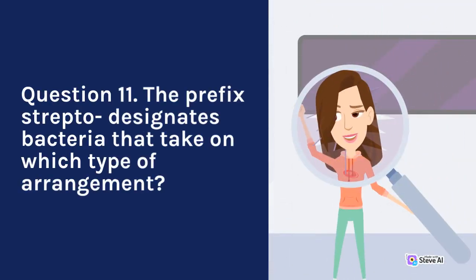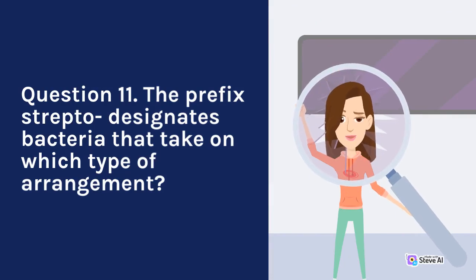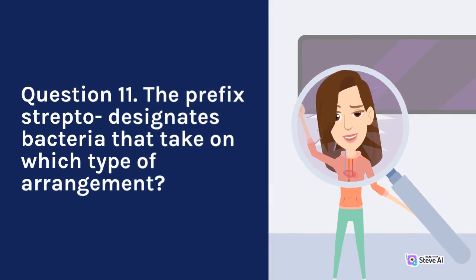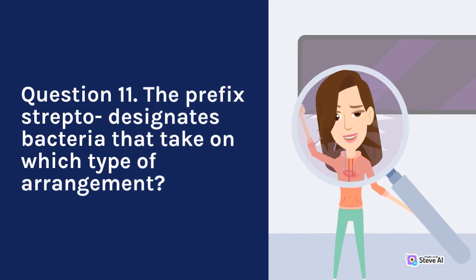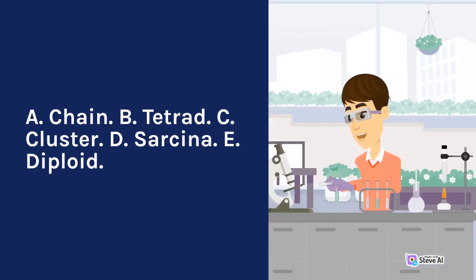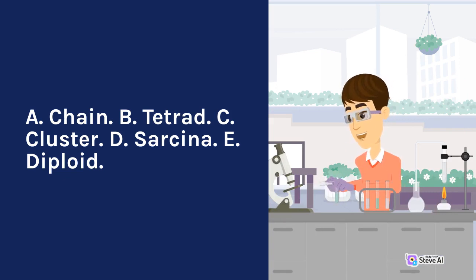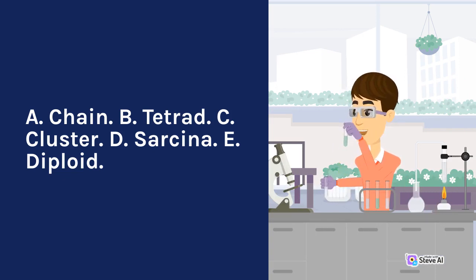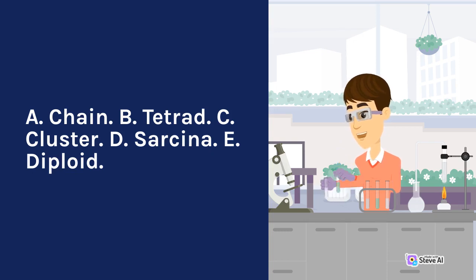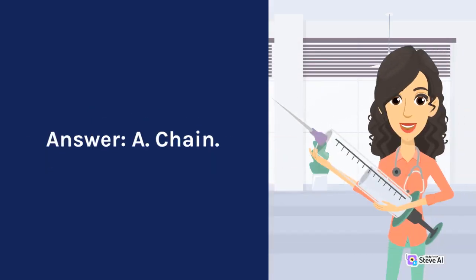Question 11. The prefix 'strepto' designates bacteria that take on which type of arrangement? A. Chain. B. Tetrad. C. Cluster. D. Sarcina. E. Diploid. Answer: A. Chain.